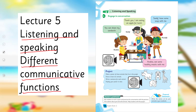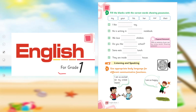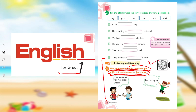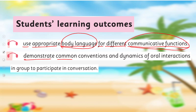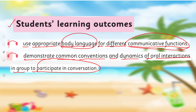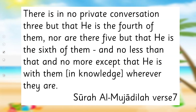Before this, in your English for Grade 1, I taught you different communicative functions through body language — how to use appropriate body language for different communicative functions. I hope you remember. If not, you may watch that video lecture again, because this practice is going to help us learn further. Today's SLOs are: use appropriate body language for communicative functions, demonstrate common conventions and dynamics of oral interaction in a group, and participate in conversation.